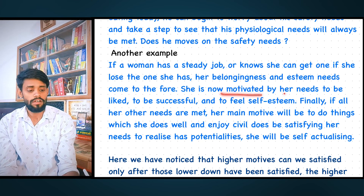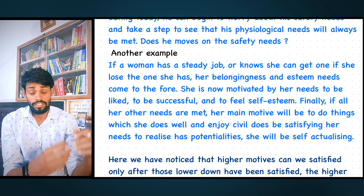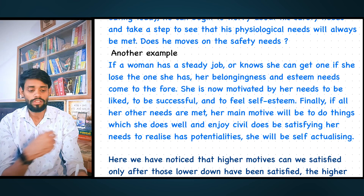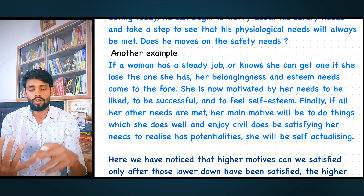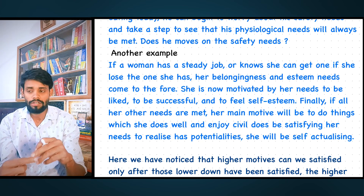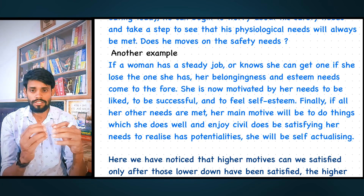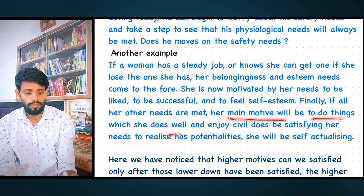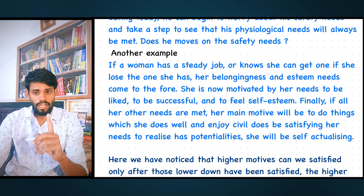Now a person is motivated by needs to be liked and to be successful. Because her daily needs are completely met, she moves to the next step — self-esteem needs, which is the fourth step. There, the focus is on esteem, safety, belongingness, respect, and self-respect. When potentiality is satisfied and the successful condition is achieved, the person moves toward self-actualization.